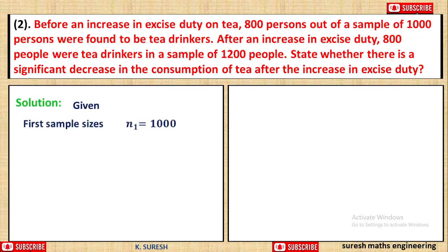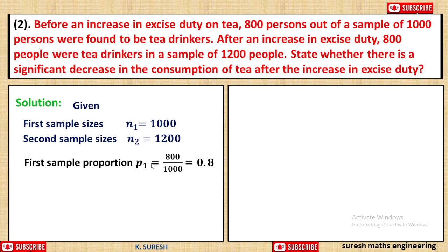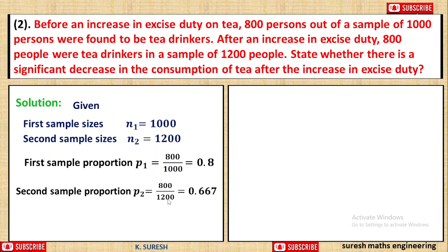First sample size: N1 equal to 1000. Second sample size: N2 equal to 1200. Sample proportion P1 equals 800 out of 1000, equal to 0.8. Second sample proportion P2 equals 800 out of 1200, equal to 0.667.